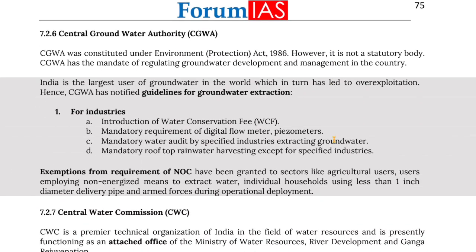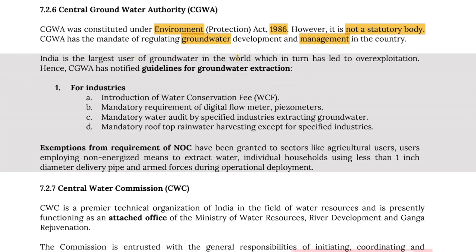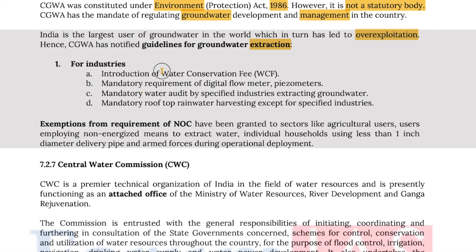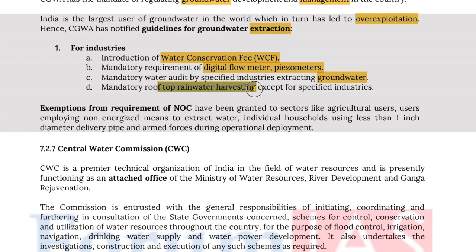The Central Groundwater Authority (CGWA) was constituted under the Environment Protection Act of 1986; however, it is not a statutory body. CGWA has the mandate of regulating underground water development and its management in the country. India is the largest user of groundwater in the world, which has led to overexploitation. CGWA has notified guidelines for groundwater extraction, including for industries: introduction of water conservation fees, mandatory requirement of digital flow meters (piezometers), mandatory water audit by specified industries extracting groundwater, and mandatory rooftop rainwater harvesting except for specified industries. Exemptions from the NOC requirement have been granted to sectors like agricultural users, users employing non-energized means to extract water, individual households using less than 1-inch diameter delivery pipes, and armed forces during operational deployment.